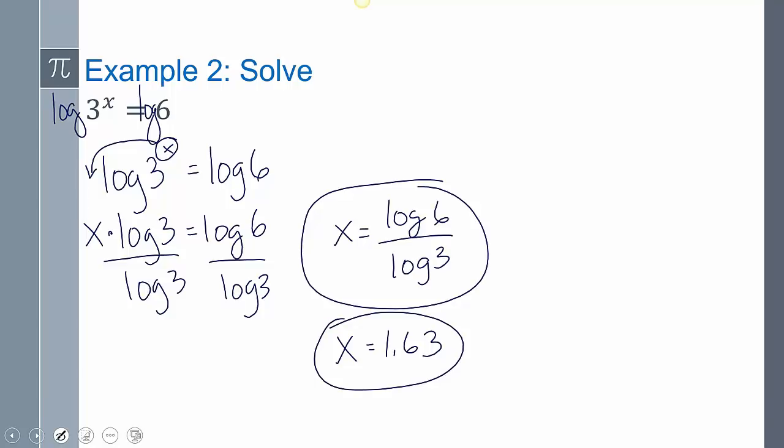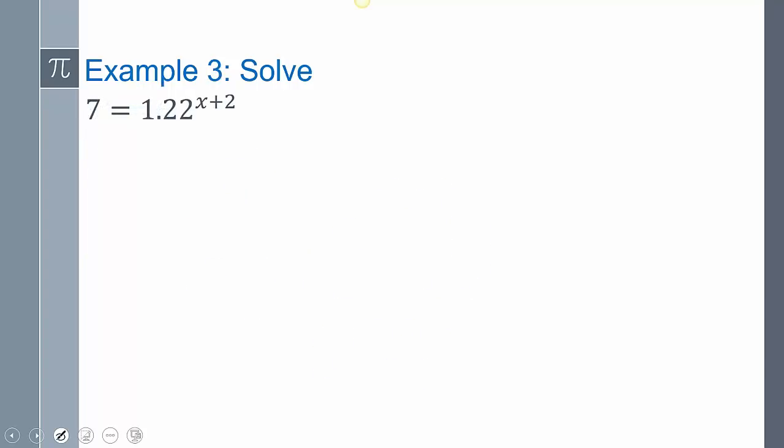So the trick here is that by converting it into a log, I was able to take whatever x in the exponent and move it to the front. Now let's look at one that's a little bit more complicated. The only reason why is there's a little bit more algebra involved, but it's basically the same thing. Same idea. 7, 1.22. No way I can make them the same. So I'm going to take log to both sides.